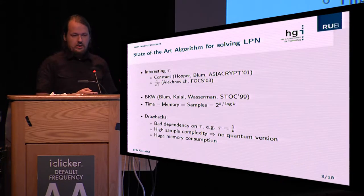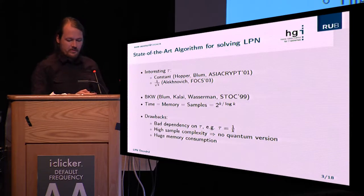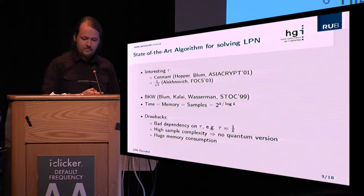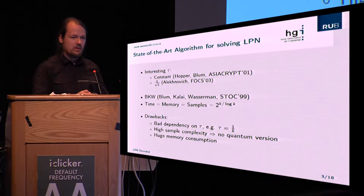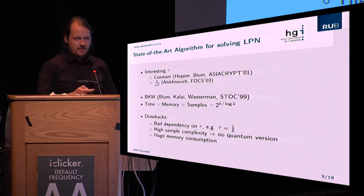How can we solve this problem? The most famous and state-of-the-art algorithm is the BKW algorithm, created by Blum, Kalai, and Wasserman. It needs time, memory, and sample complexity of 2^(k/log k), so it's slightly sub-exponential. For constant τ this is also the fastest algorithm known at the moment.